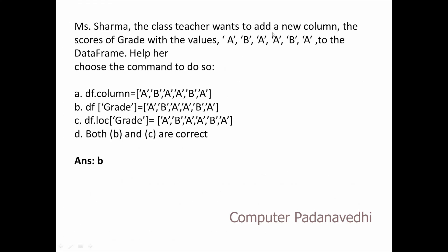The class teacher wants to add a new column 'score of grade' with the value 'ABA' to the DataFrame Helper. Help choose the command to do so. Now, if we are not correct, we will create a new column. df.columns is not the correct approach.